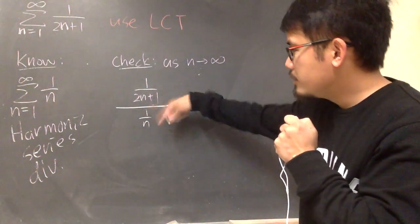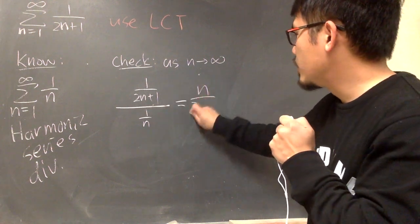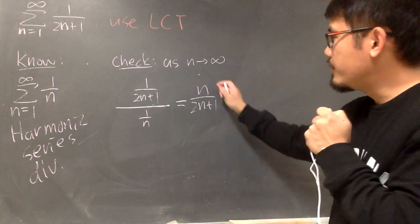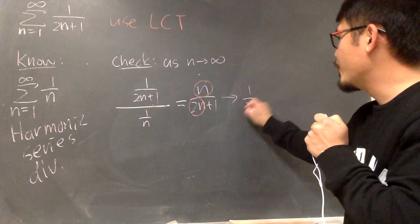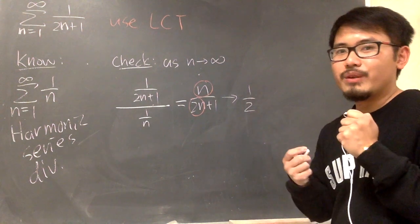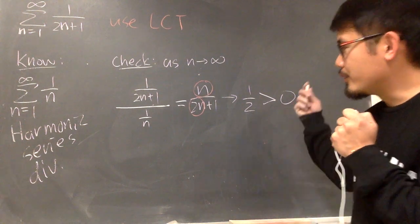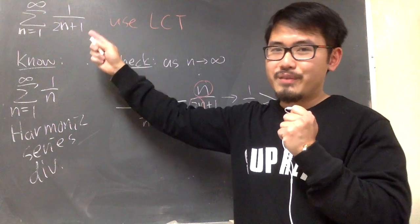And we know this is the same as... we can just flip this. So we have n over 2n plus 1. And then, as n goes to infinity, this approaches 1 half. And for the limit comparison test, we know this is greater than 0. So we can show that this is also divergent.